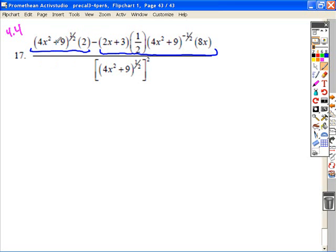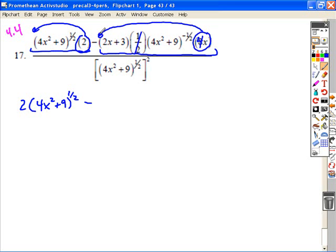If we take this first group, I'm going to reorder this. I'm going to put the monomial factor in front, so I have two, and then four X squared plus nine to the one-half. So there's my first fraction, and then minus, let's simplify this again. If we take half of eight, this reduces to four X, and let's move that in front again, putting the monomial factors at the beginning.